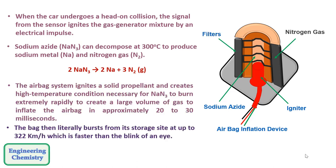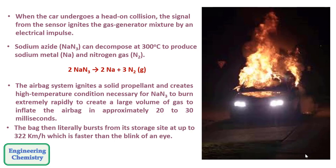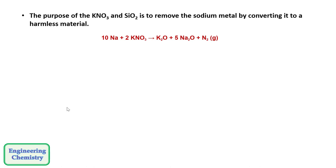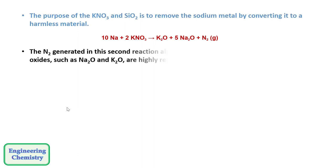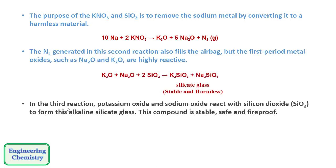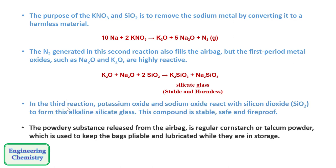The bag literally bursts from its storage site at up to 322 kilometers per hour — faster than the blink of an eye. The sodium metal produced in the first reaction is extremely reactive and hazardous; if it contacts water, it can lead to an explosion. The purpose of potassium nitrate and silica is to remove the sodium metal by converting it to a harmless material, and the nitrogen generated in this second reaction also fills the airbag. Since first-period metal oxides such as sodium oxide and potassium oxide are highly reactive, in the third reaction they react with silica to form alkaline silicate glass, which is stable, safe, and fireproof. The powdery substance released from the airbag is regular cornstarch or talcum powder, used to keep the bags pliable and lubricated while in storage.